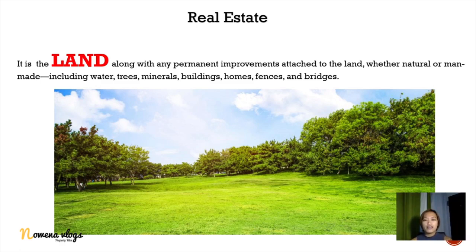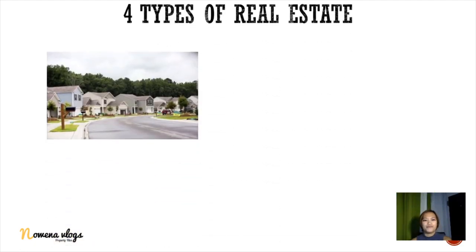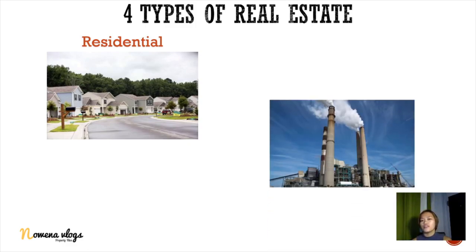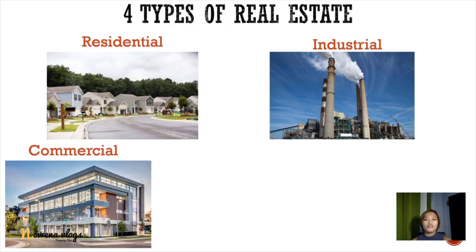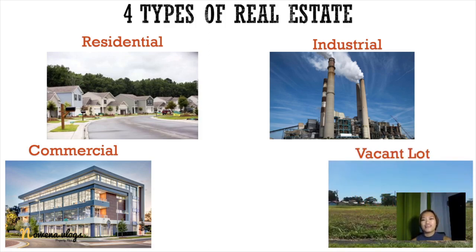There are four types of real estate. First is residential — it is where you reside, where individuals live. Second is industrial, wherein factories and warehouses are located or built. Third is commercial real estate, wherein malls, offices, or any space or development that will help you generate income. The last one is vacant lot, which is also part of the four types of real estate.